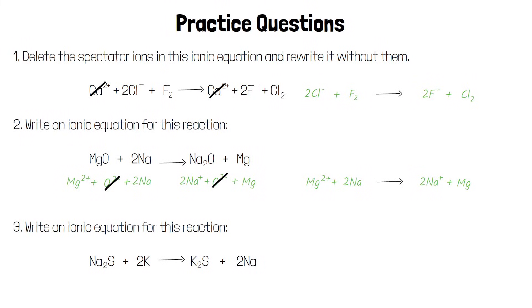In the last question the ions are 2Na plus S2 minus and 2K produces 2K plus S2 minus and 2Na. The S2 minus is a spectator ion so we cross it out. That gives us a final ionic equation 2Na plus plus 2K produces 2K plus plus 2Na.